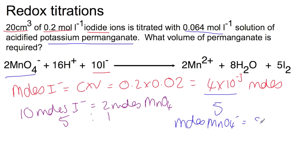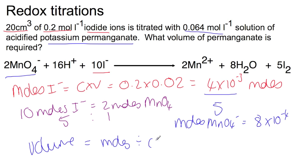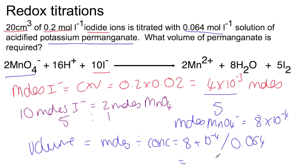That gives a value of 8 × 10⁻⁴ mol of permanganate. To find the volume, divide moles by concentration: 8 × 10⁻⁴ ÷ 0.064 = 0.0125 litres, or 12.5 millilitres.